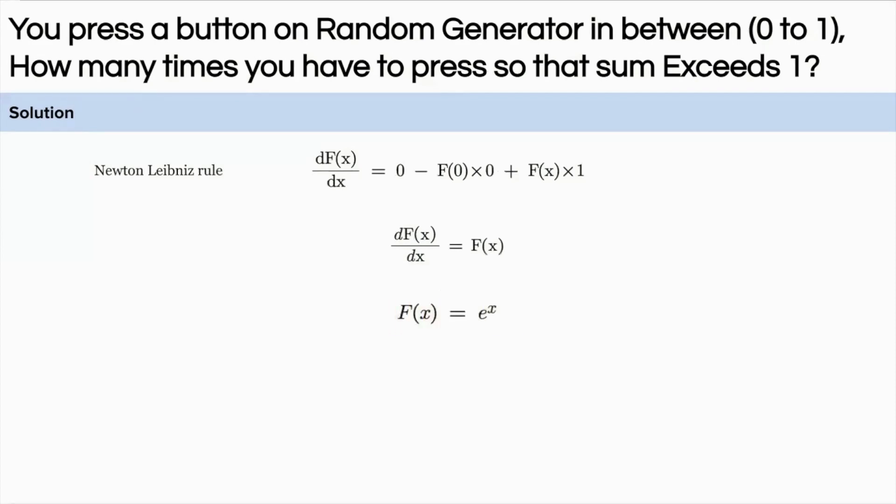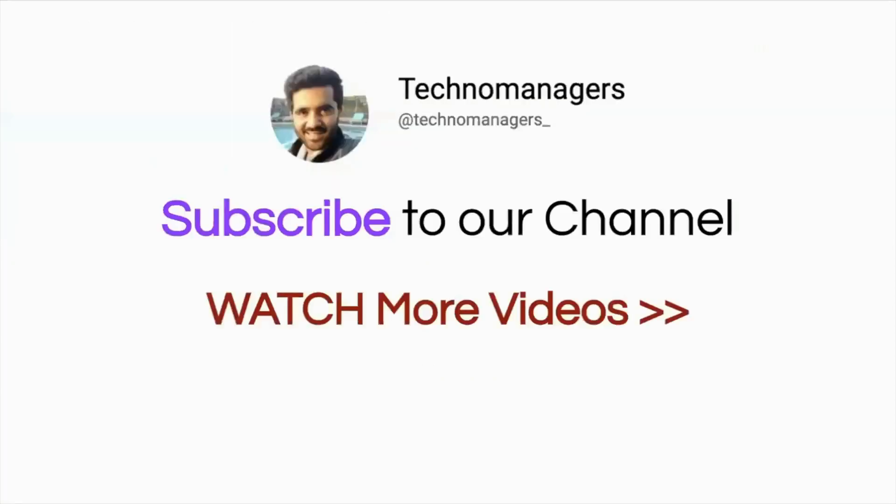Now we need to calculate f(1). That is where we will replace x with 1 and the answer is e. So the expected number of presses which we need to make so that the sum exceeds 1 is e. I hope you have learned something new from this video. I will meet you on the next one. Till then, keep learning and keep watching.